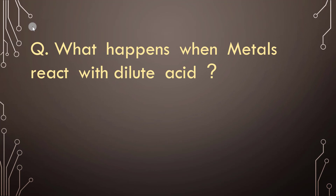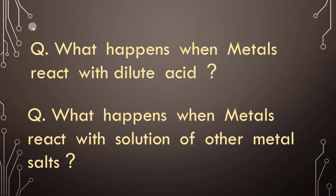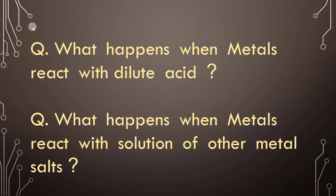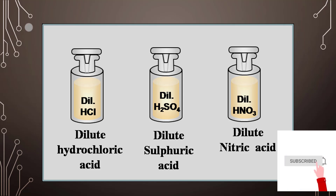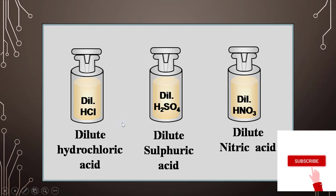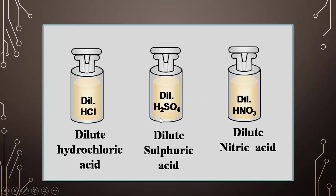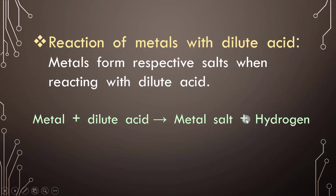First we will cover what happens when metal reacts with dilute acid, and then what happens when metal reacts with the solution of other metals. We are introducing three dilute acids: hydrochloric acid HCl, sulfuric acid H₂SO₄, and nitric acid HNO₃.